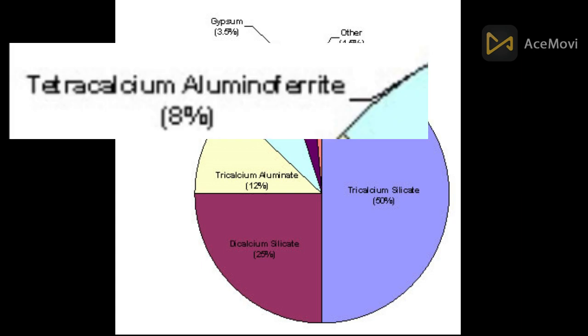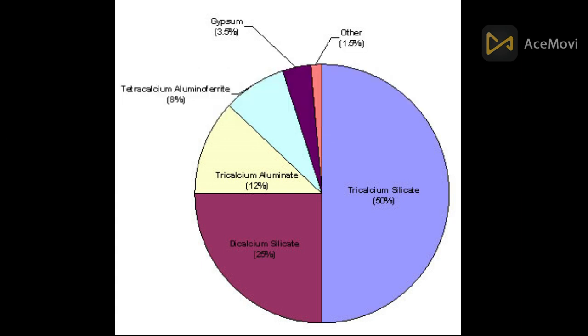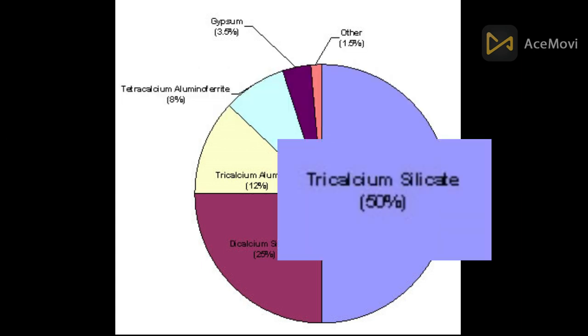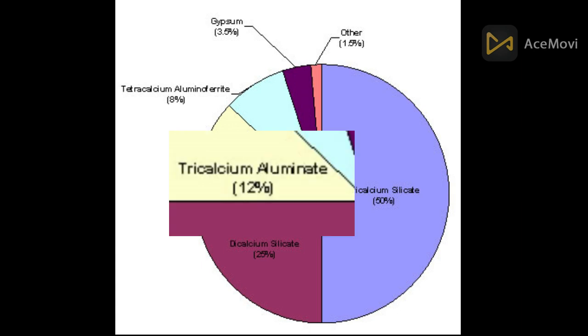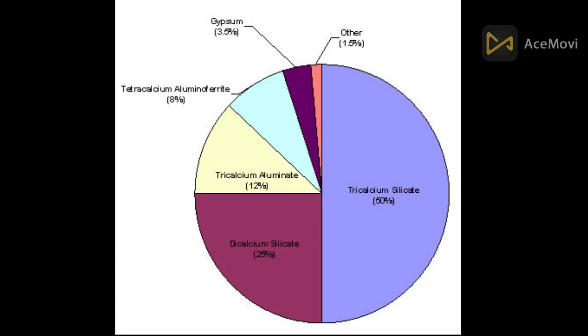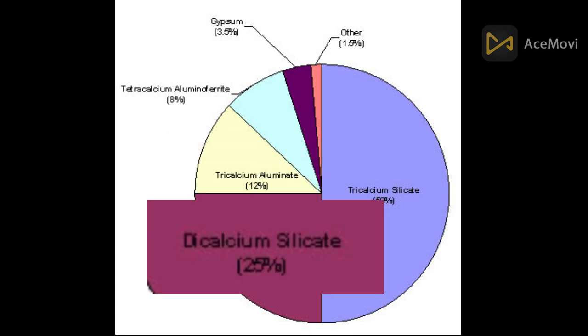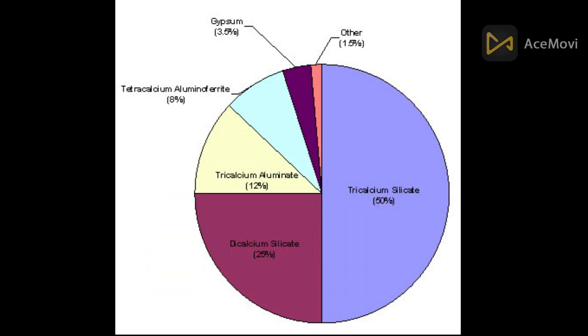The key compounds involved include: tetra calcium alumino ferrite, tri calcium silicate, tri calcium aluminate, and di calcium silicate. This gives us the idea of how cement is composed.